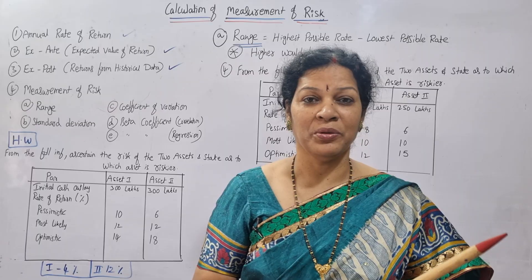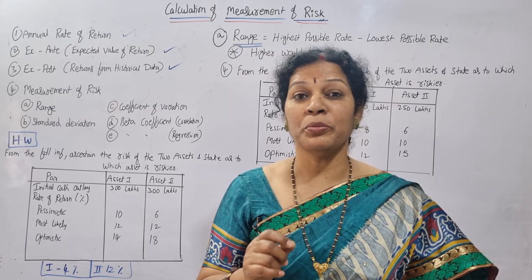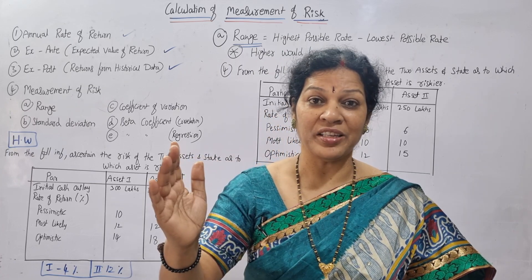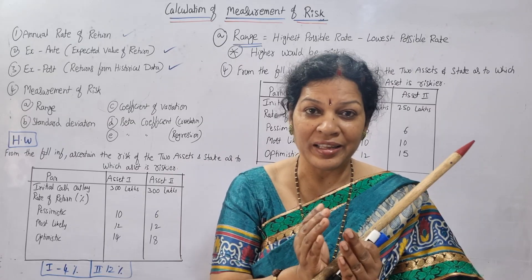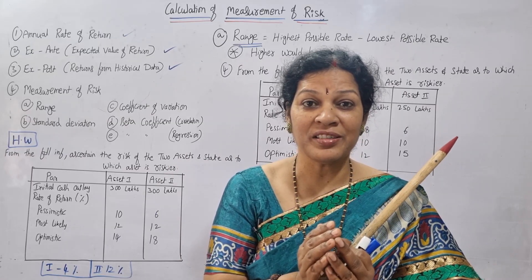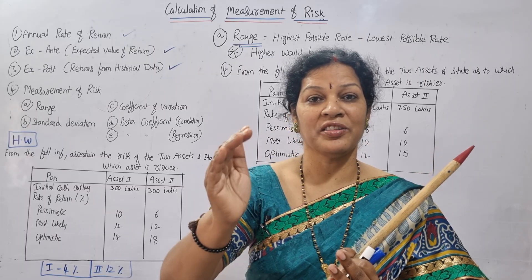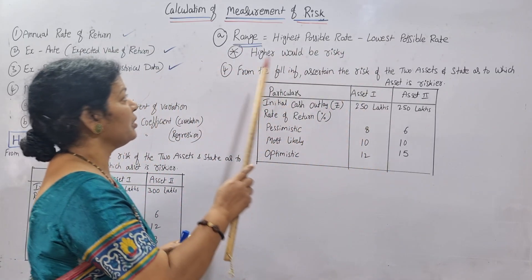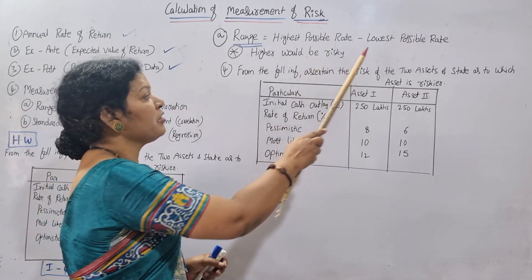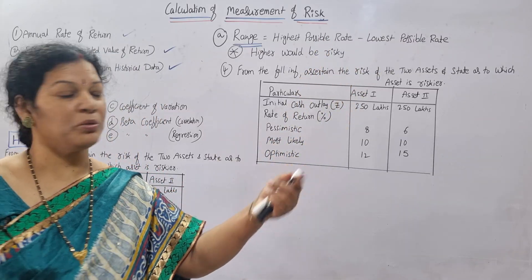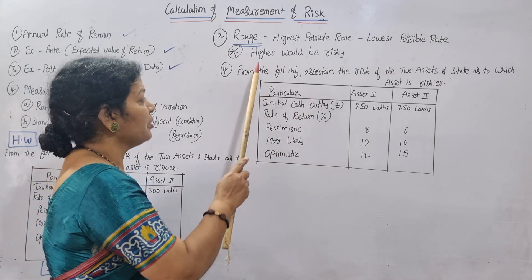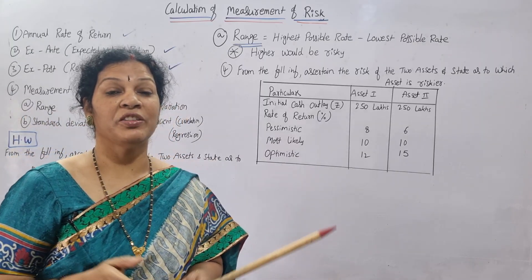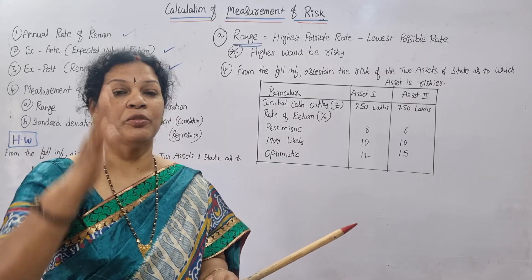How do you take the decision? The formula is: highest value minus lowest value. Whichever company has the highest range, that is more risky. Higher range means higher risk. If the range value is less, it is more recommended. So: highest range equals high risk, lowest range equals lower risk and more recommended.